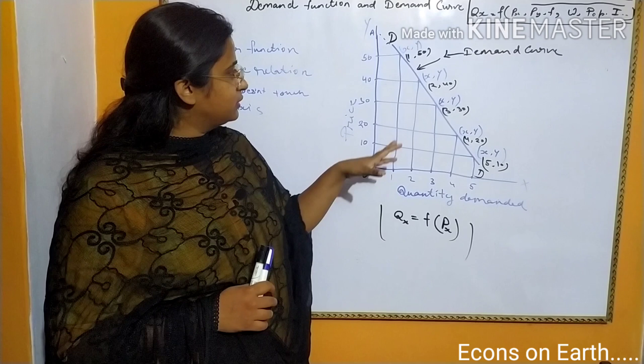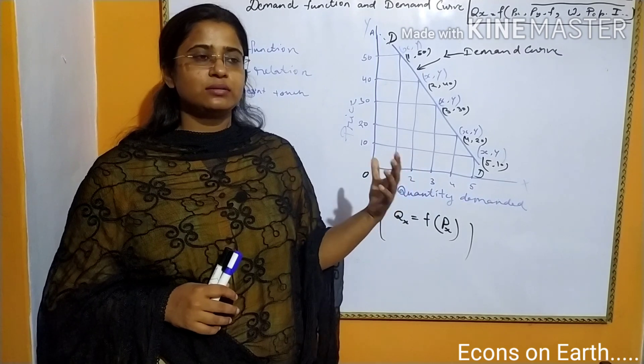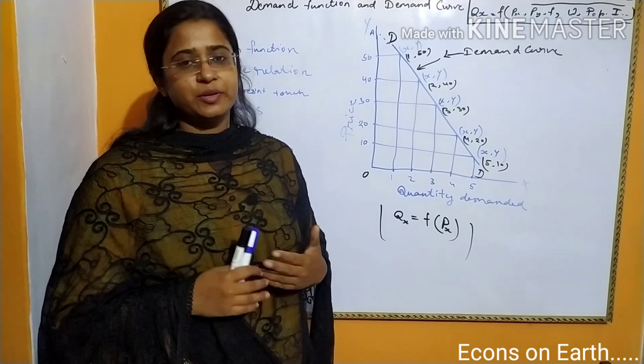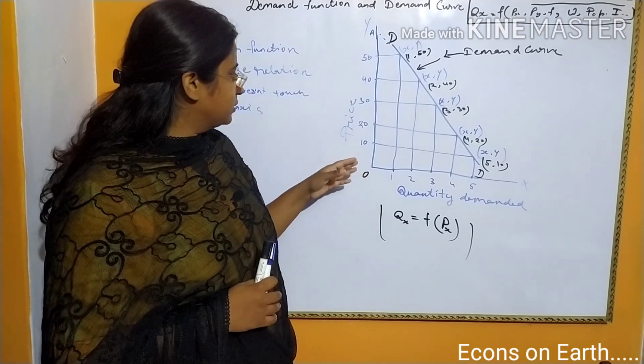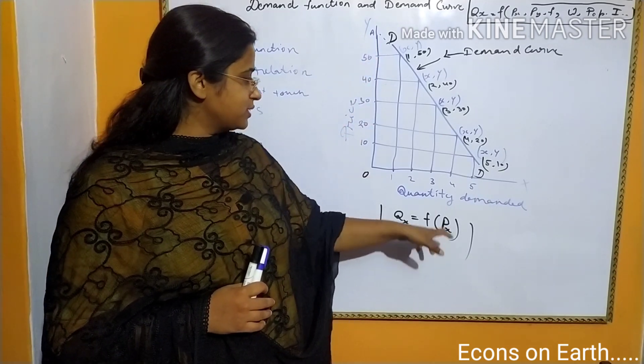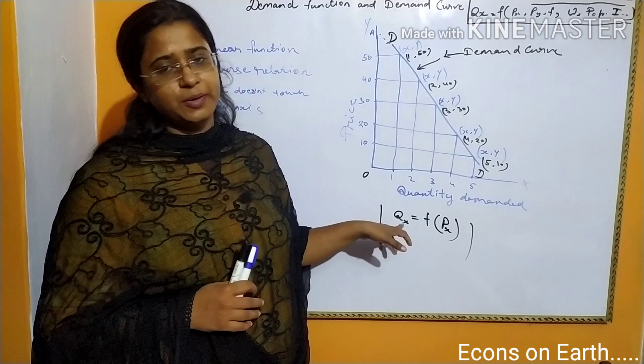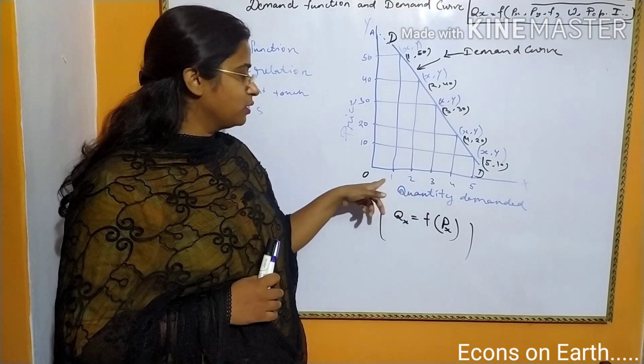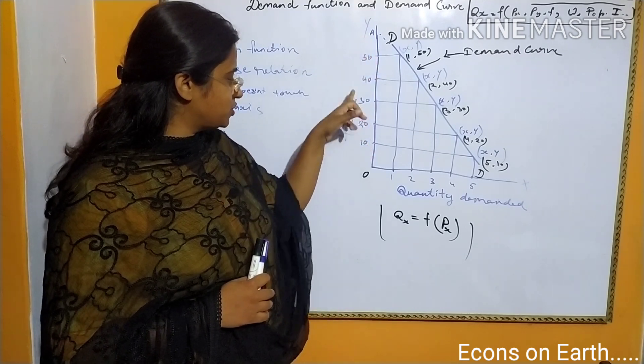Here we see that this is a negatively sloping line, which shows that the variables have a negative relationship. One variable increases and the other variable will decrease. The Y axis is showing price of X and the X axis is showing the quantity demanded of X. Now if the price of X goes up, the quantity demanded will go down, and if the price of X comes down, the quantity demanded will go up.